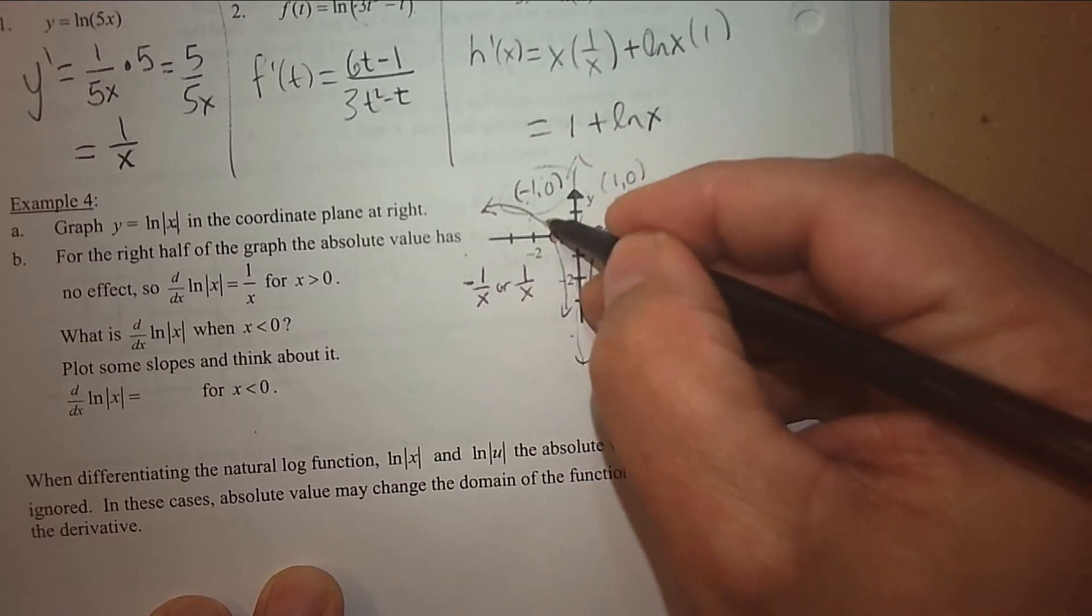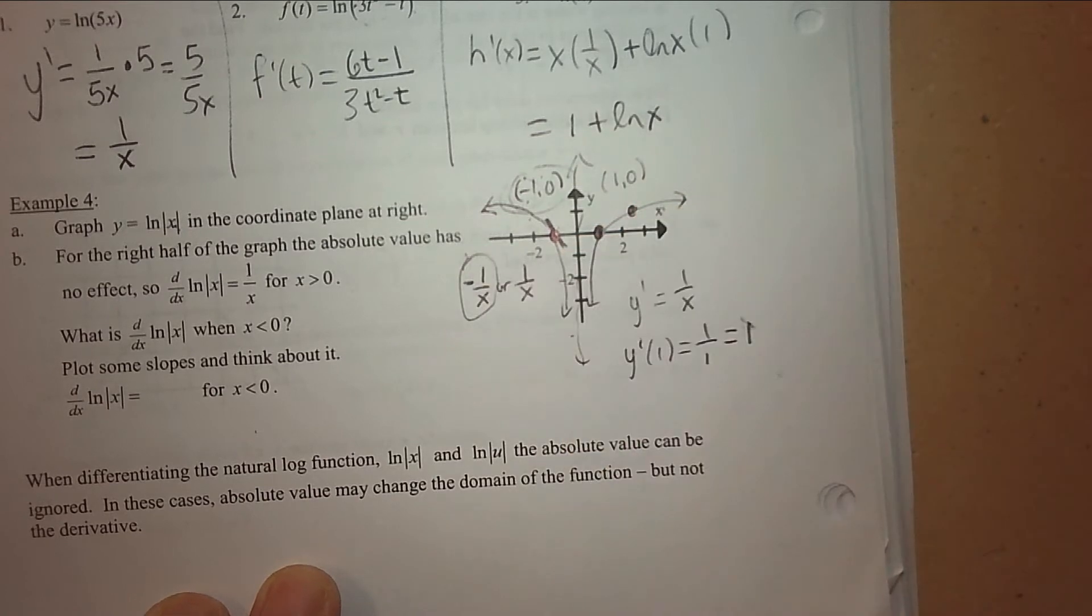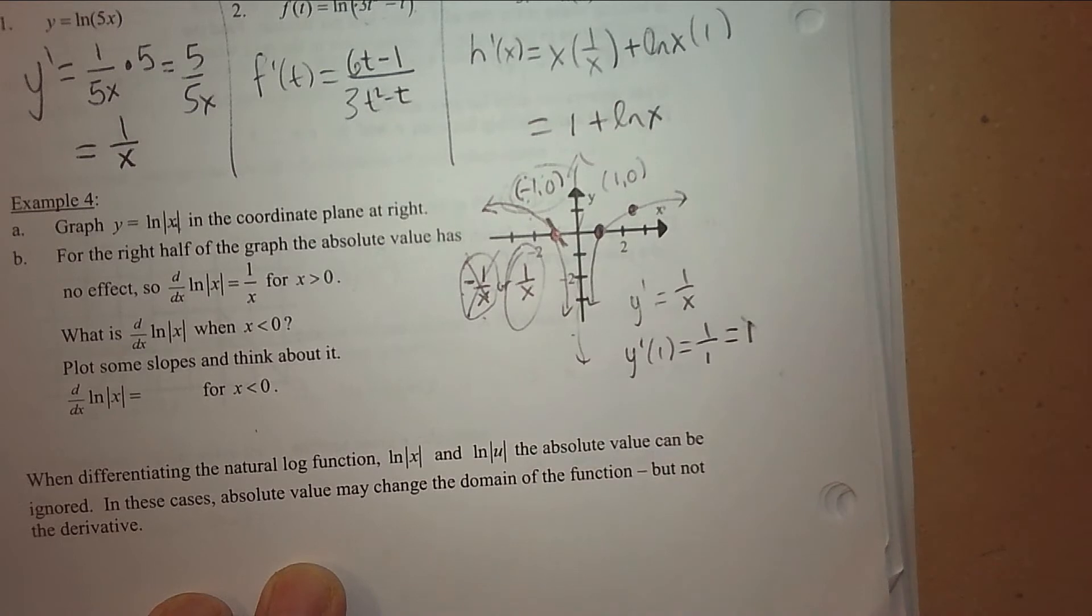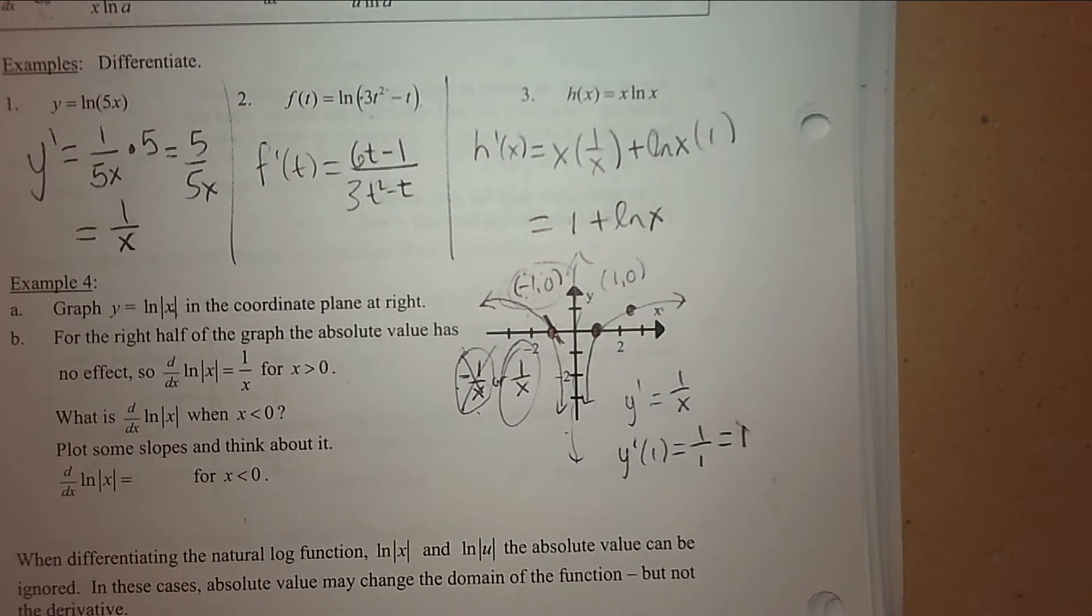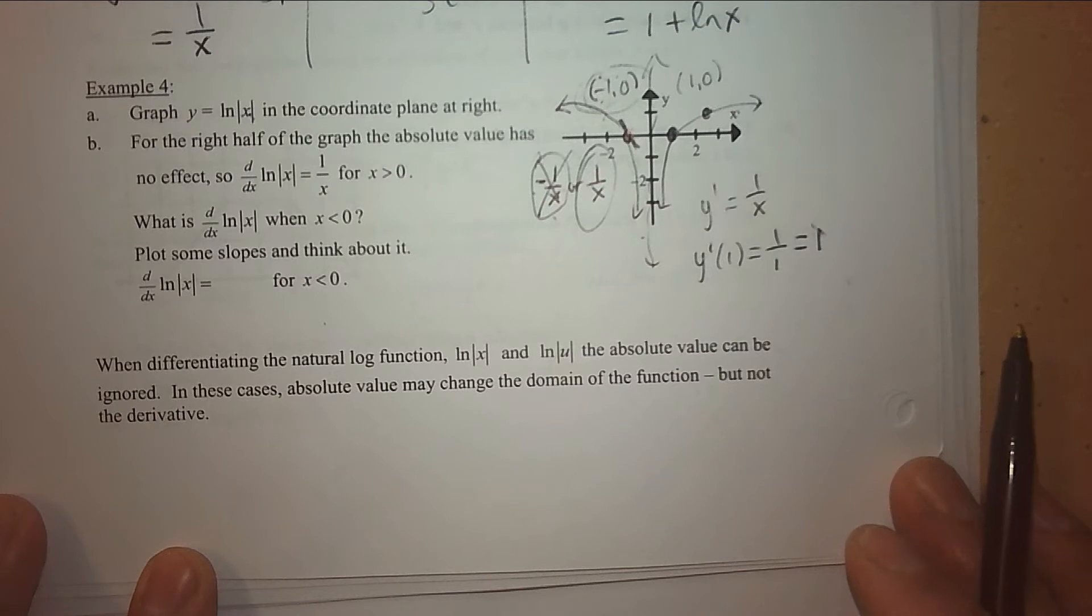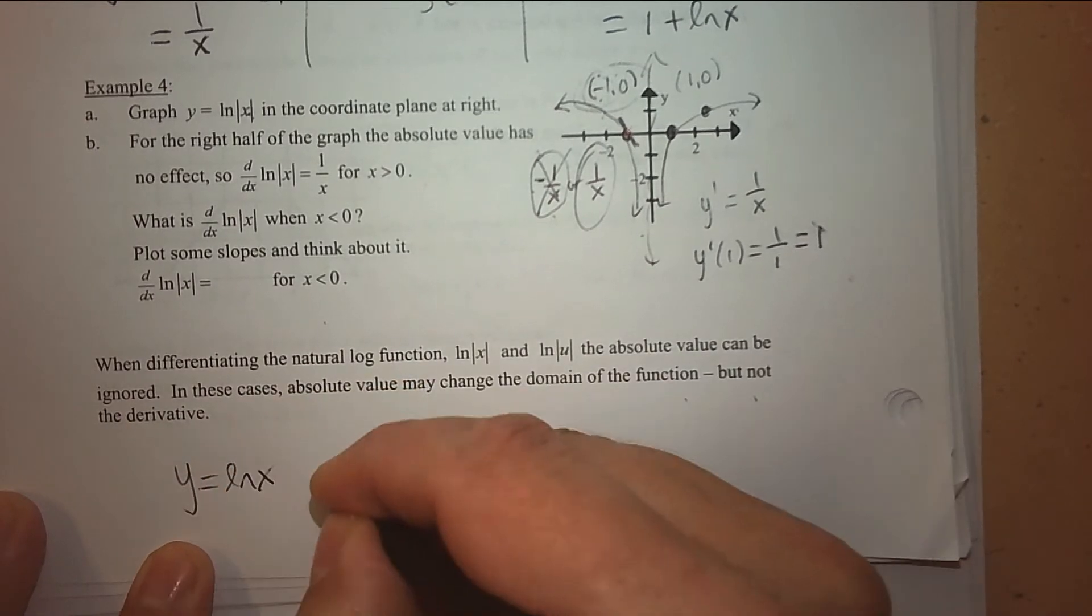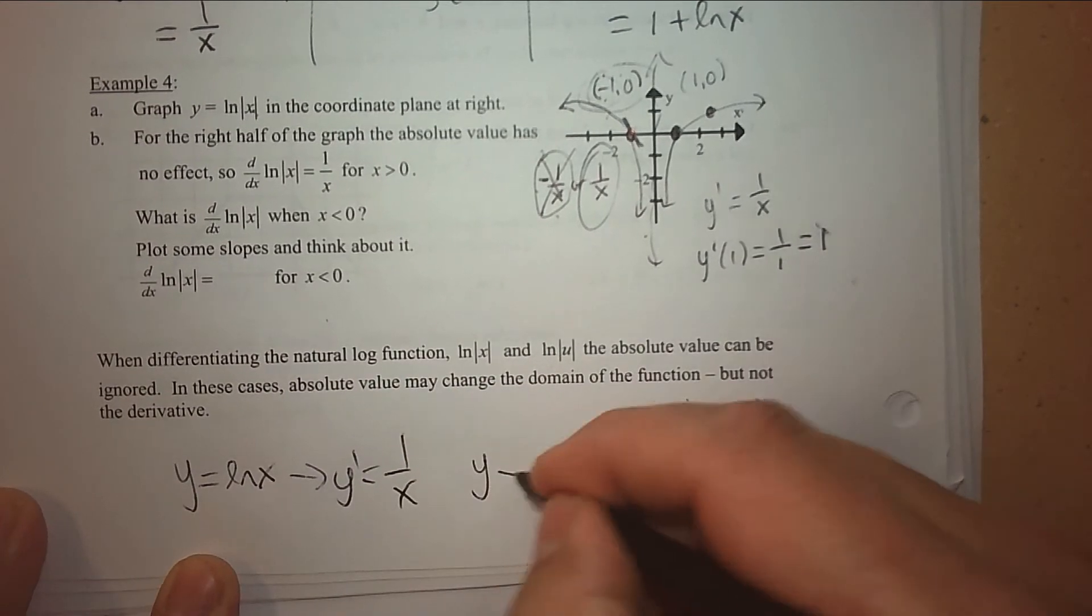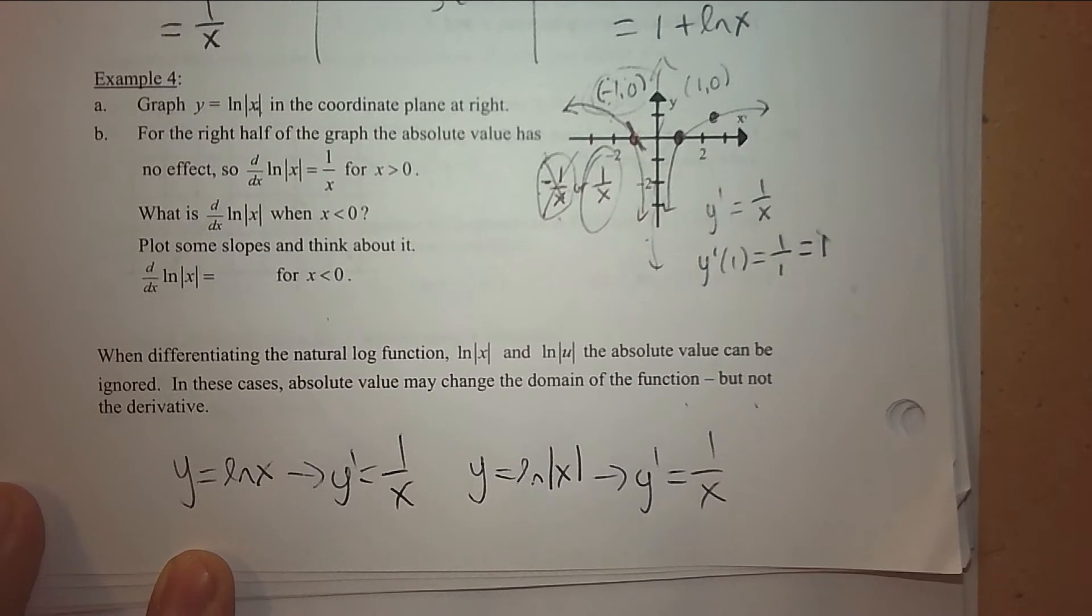On the right side, the derivative at x = 1 is 1. What happens at (-1, 0)? What do you think the derivative is here? If I plug negative 1 into 1 over x, what answer would that give you? Positive. A negative divided by a negative would give me positive. So whether it's on the left or the right, the derivative stayed the same. The absolute value inside doesn't change what the derivative is. It's having an understanding of why that's the case.